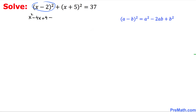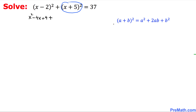Then we are going to take care of this other squared term, using the fact that (a plus b) squared equals a squared plus 2ab plus b squared. Expanding this gives us x squared plus 10x plus 25, and we still have 37 on the right-hand side.